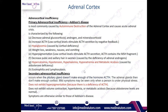Secondary adrenocortical insufficiency occurs when the pituitary gland cannot make enough ACTH. To differentiate primary from secondary: in secondary, there would be no ACTH, and therefore no hyperpigmentation. In primary Addison's disease, ACTH is increased as the body tries to compensate — leading to hyperpigmentation. In secondary adrenocortical insufficiency, the problem is within the pituitary gland, so there is no ACTH and no hyperpigmentation, but all other findings of adrenocortical insufficiency are present.